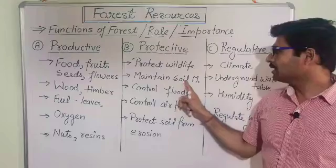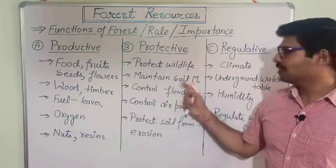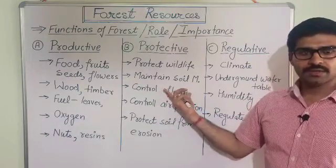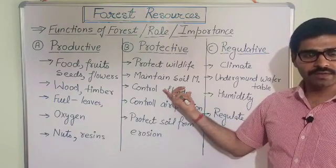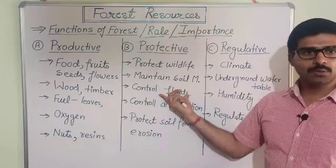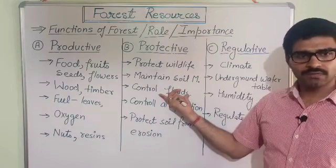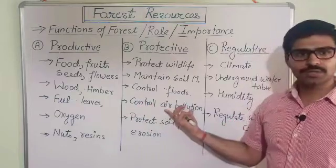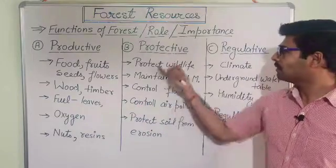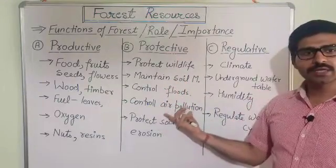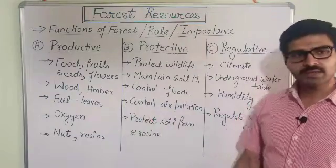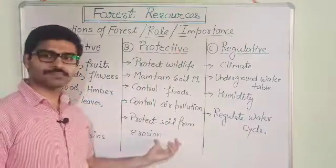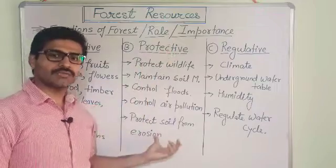The second and third functions — protective and regulative — are the indirect roles of the forest. The protective function means forests protect different wildlife species; the wildlife present on Earth exists largely due to forests. Forests also maintain soil moisture, control floods, control air pollution, and protect soil from soil erosion.